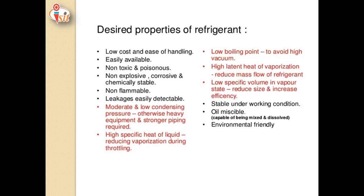The desired properties of a refrigerant are very important. First, low cost and ease of handling — refrigerants used in domestic refrigerators and air conditioning must be low cost and easy to handle. Second, easily available — the refrigerant should be available in any part of the country. Third, the refrigerant should be non-toxic, non-poisonous, non-explosive, non-corrosive to pipe materials, chemically stable, and non-flammable. Additionally, leakage should be easily detectable.